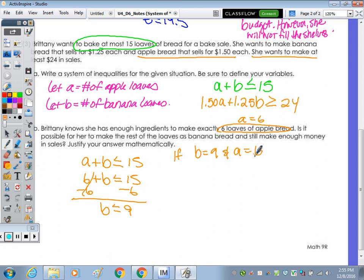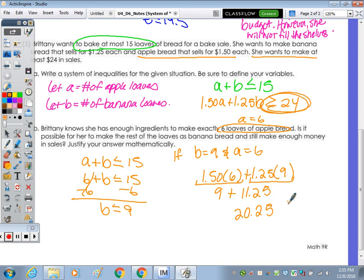So if B is nine, and A equals six, the question says, is it possible for her to make the rest of the loaves as banana bread and still make enough money in sales? So let's plug in $1.50 times six plus $1.25 times nine. $1.50 times six is three, and then $1.25 times nine is $11.25 for a total of how much money? $20.25. Is that greater than or equal to 24? No. So it said, is it enough? Or is it possible for her to make, the answer is no. And we just justified mathematically.